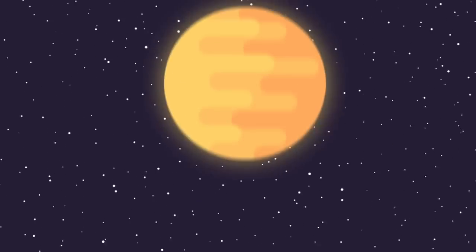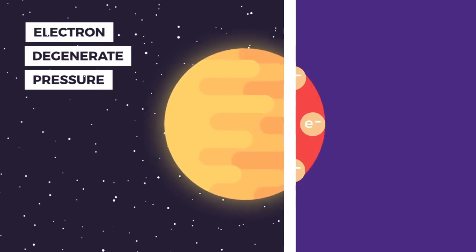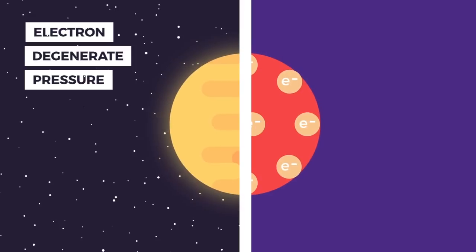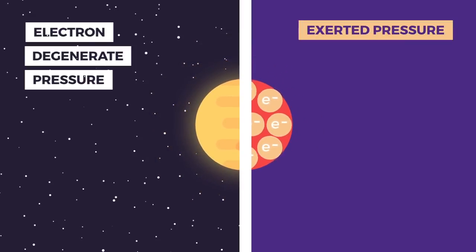Now there's another form of pressure which slows down or stops the collapse of the star. This is called the electron degenerate pressure. To put it in simple words, the collapse squeezes the electrons in a very small space, and the more it squeezes, the more pressure is exerted.